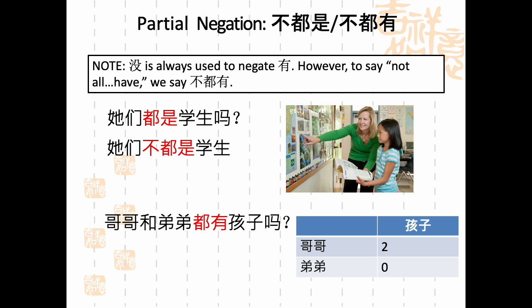Let's look at another example. 哥哥和弟弟都有孩子吗？Looking at the chart, 哥哥 has 两个孩子 — he has two. 弟弟 has no children — 弟弟没有孩子. So 哥哥 has two children and 弟弟 has none. We would use the partial negation, and the verb is 有, not 是. We would answer: 他们不都有孩子 — not all of them have children.